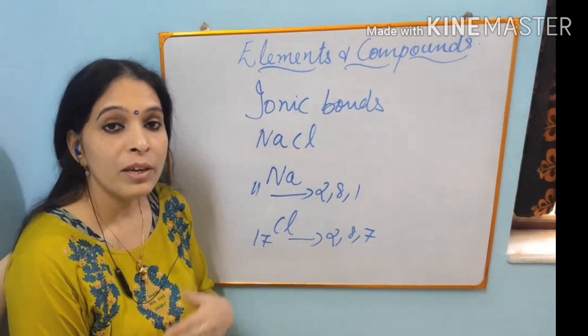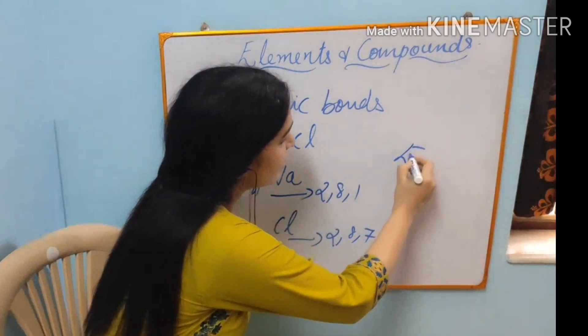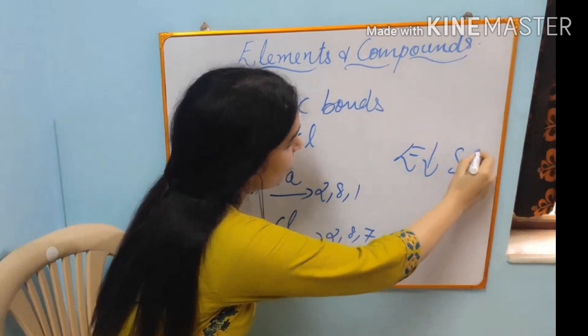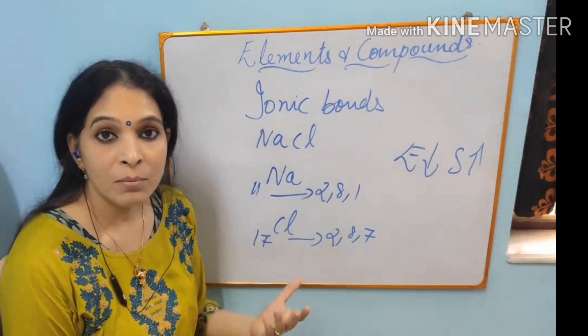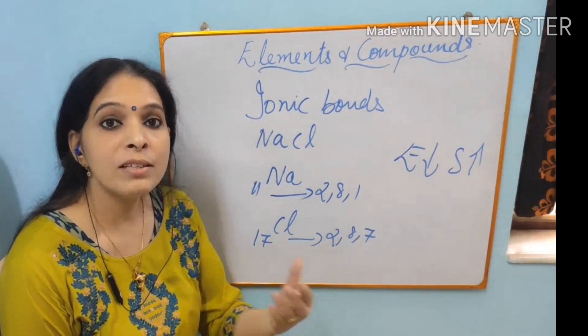In the universe, when energy is less, stability will be less. In the universe, everything's ultimate aim is to get stability by releasing energy.